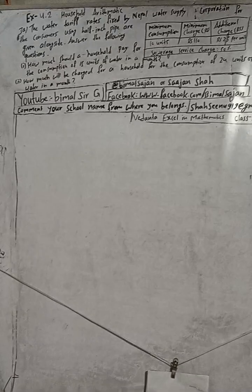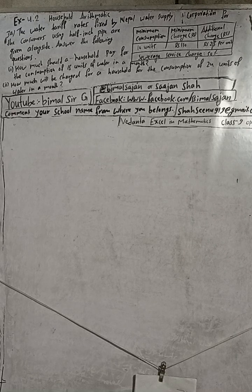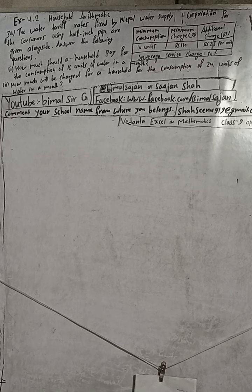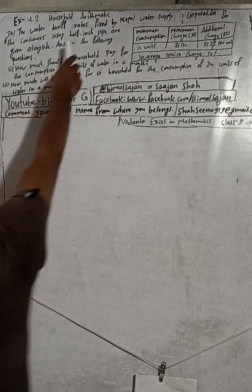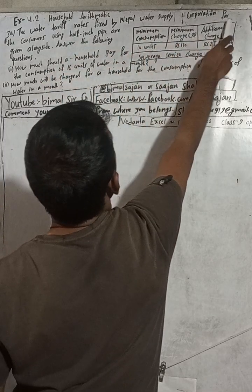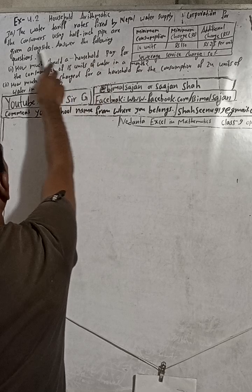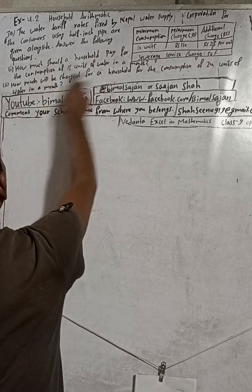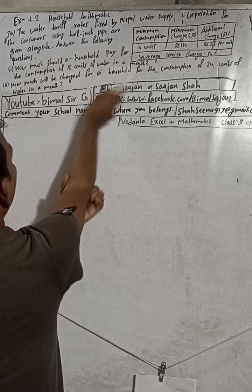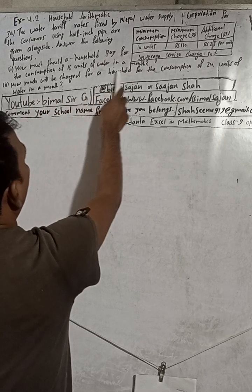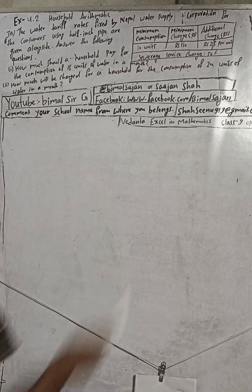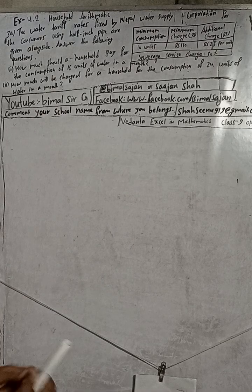Hi class 9 and 10 students, welcome back to Bhimalsarji YouTube channel. This is question number 3a, exercise 4.2, household arithmetic, class 9 excellent mathematics. The question here: the water tariff rates fixed by Nepal Water Supply Corporation for consumers using half-inch pipe are given alongside. Answer the following questions: how much should a household pay for a consumption of 15 units of water in a month? Number two: how much will be charged for a household for the consumption of 24 units of water in a month?